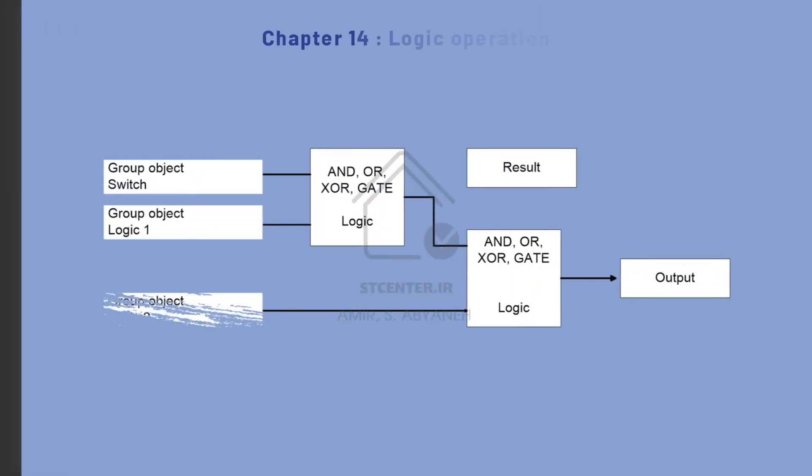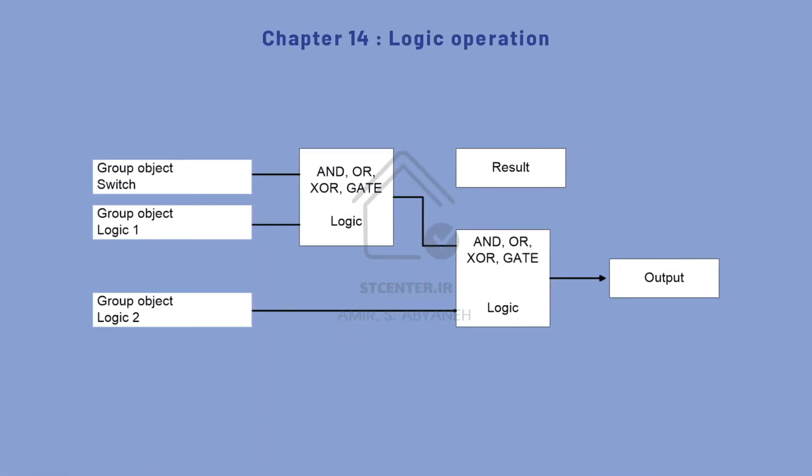The next chapter is logic operations. You can understand how to implement logic functions such as AND, OR, and similar operations in KNX systems. These exist in some devices, or you can use a specific logic controller, or implement it with the main software in the monitoring layer in a BMS.